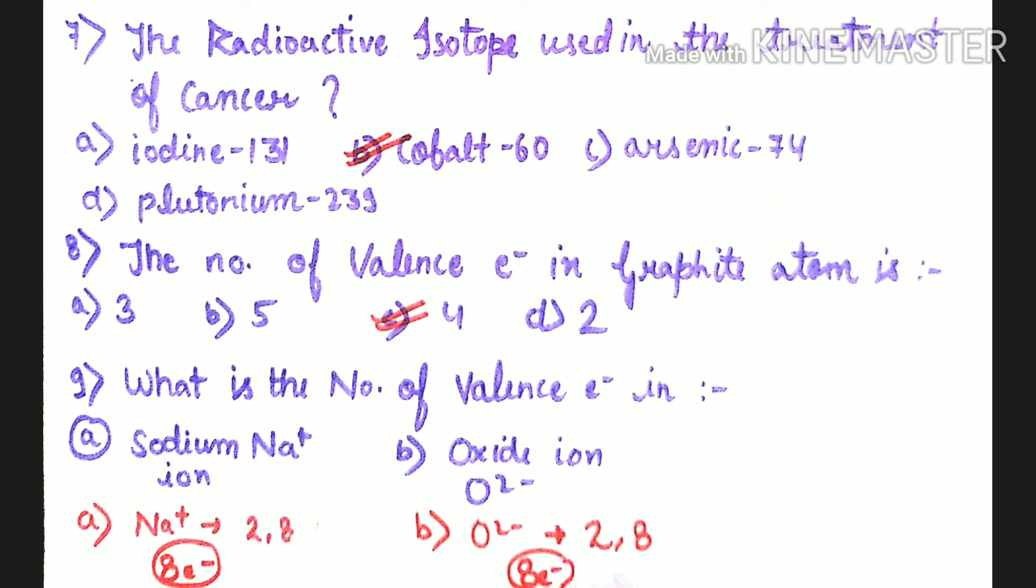Question number 9: What is the number of valence electrons in sodium ion and oxide ion? Sodium ion means its atomic number is 10, so 2,8 configuration, and 8 electrons present in its outer shell, so 8 will be its valence electrons. Next, oxide ion O2-, its atomic number is 10, so 2,8 will be the electronic configuration and 8 will be valence electrons in this particular ion.